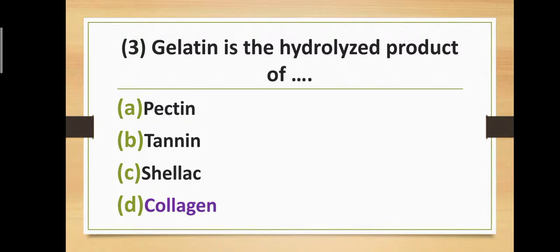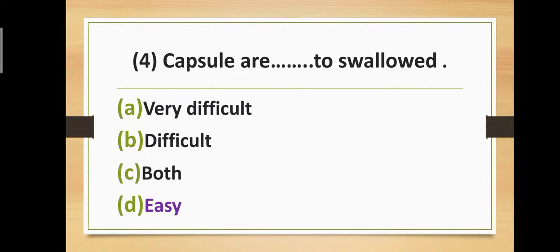Question number three: Gelatin is the hydrolyzed product of — Option A: pectin. Option B: tannin. Option C: shellac. Option D: collagen. The correct answer is option D — collagen. Gelatin is the hydrolyzed product of collagen.